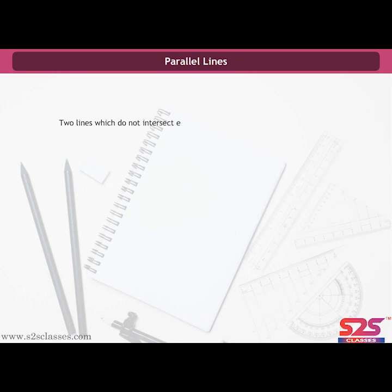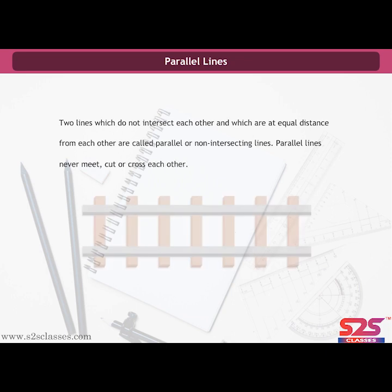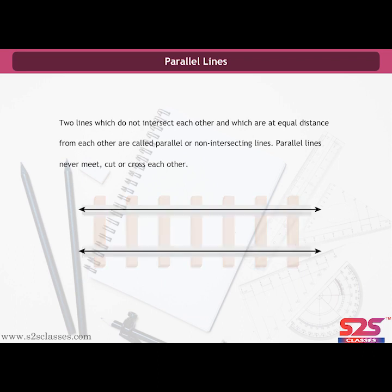Parallel lines: two lines which do not intersect each other and which are at equal distance from each other are called parallel or non-intersecting lines. Parallel lines never meet, cut, or cross each other. Looking at a railway track, we find that both tracks do not intersect each other and are equidistant from each other — so railway tracks form an example of parallel lines.